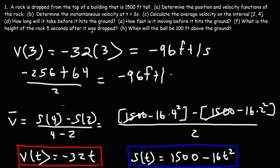In this particular problem, the instantaneous velocity at t equals 3 is equal to the average velocity on the interval from 2 to 4. That makes sense because 3 is right between 2 and 4. It doesn't always work that way, but for this problem it did.